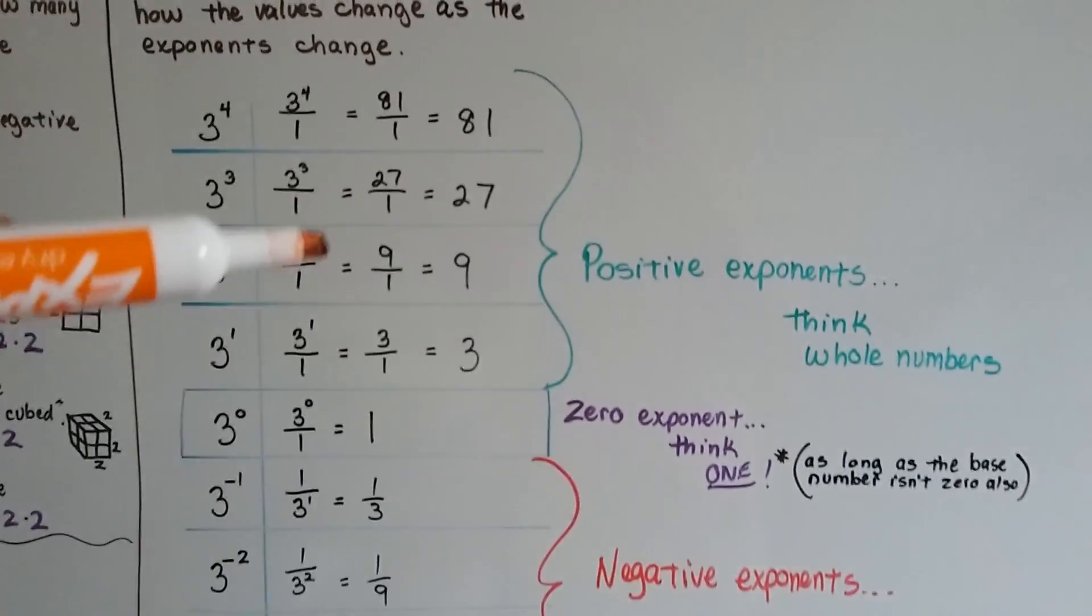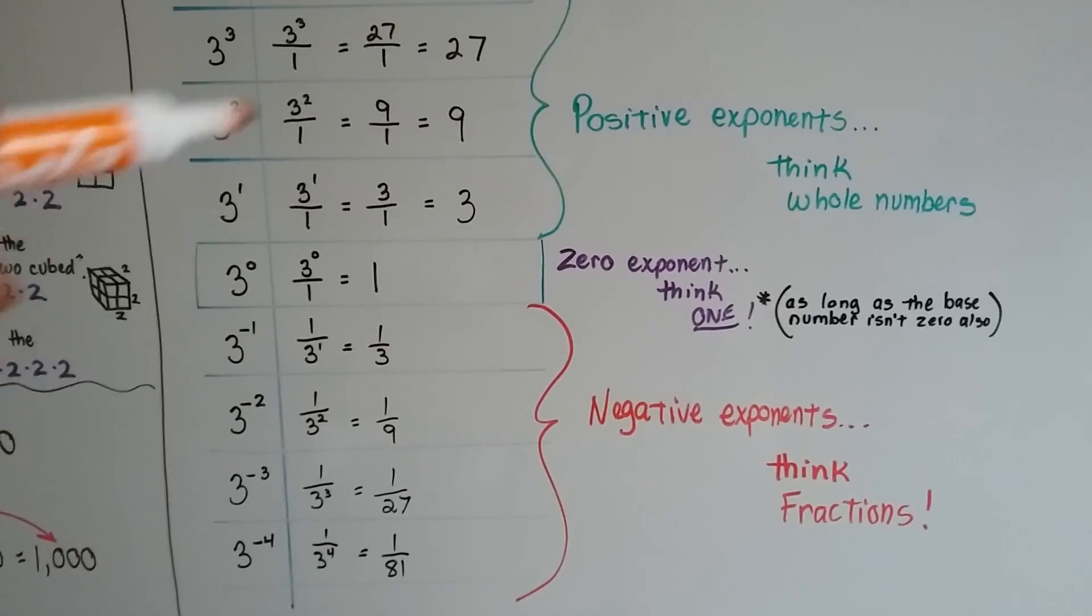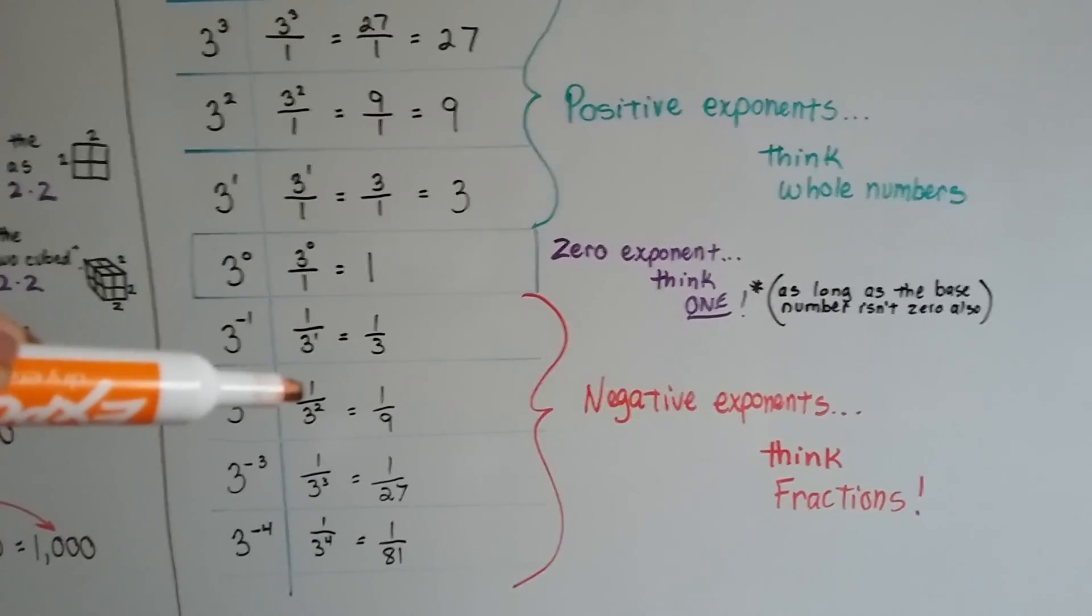Well, as we get into the negatives, it's going to be under 1. It's going to flip around. We went from being over 1 to being under 1 as a fraction.